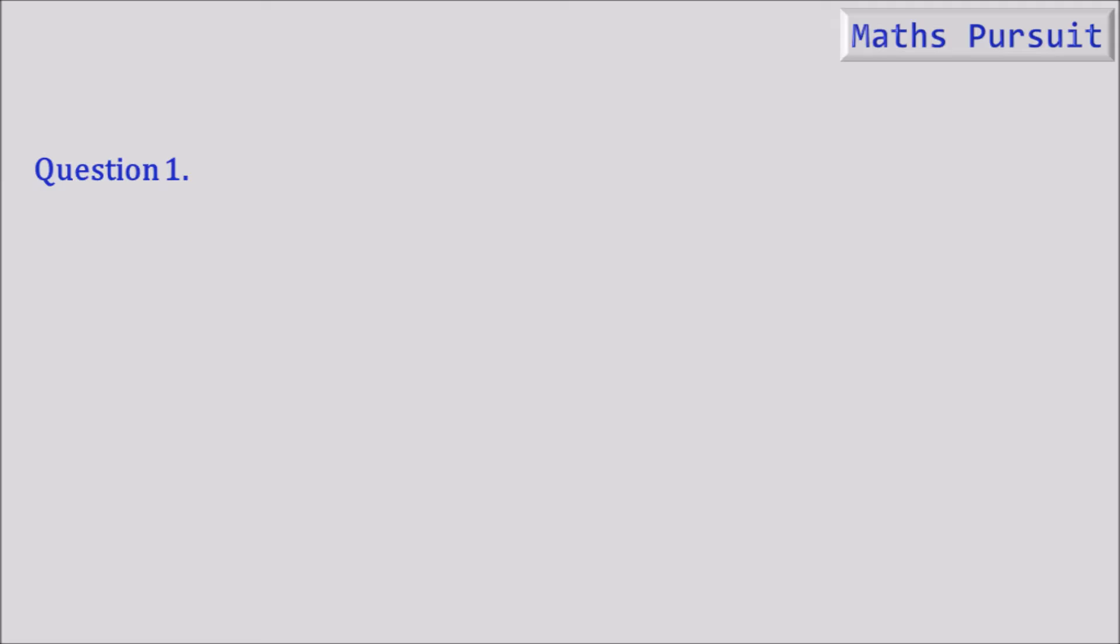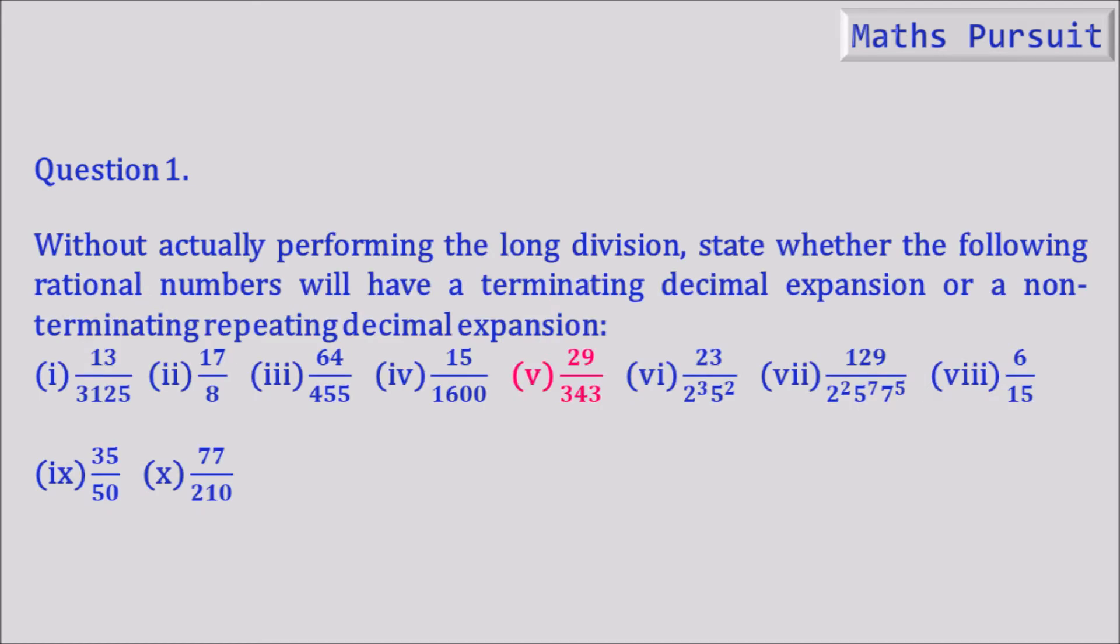In Question 1, part 5, it is said that without actually performing the long division, state whether the following rational numbers will have a terminating decimal expansion or a non-terminating repeating decimal expansion. So we need to find out whether the given number, that is 29 divided by 343, has a terminating or non-terminating repeating decimal expansion.